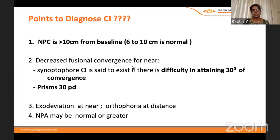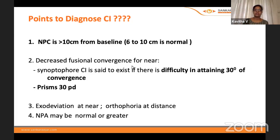Fusional convergence is measured using a synoptophore or prisms. You bring the object close or use prisms to make the eyes converge. If the person can fuse and see the object clearly, convergence is adequate. If on the synoptophore they cannot fuse beyond 30 degrees, or cannot fuse with prisms beyond 30 prism diopters, then there is deficiency in convergence.